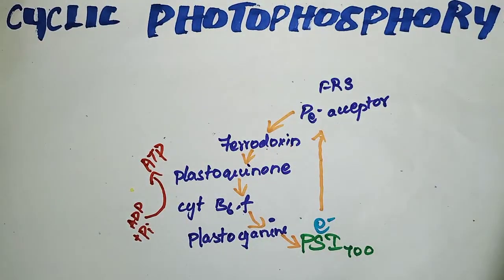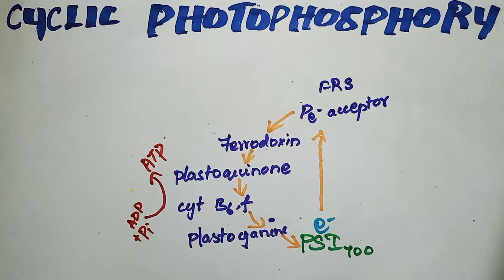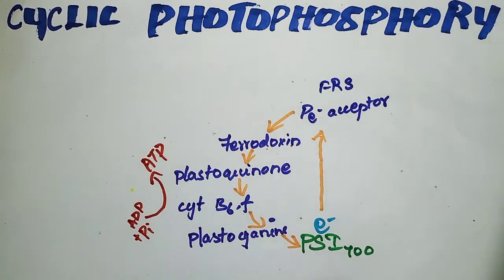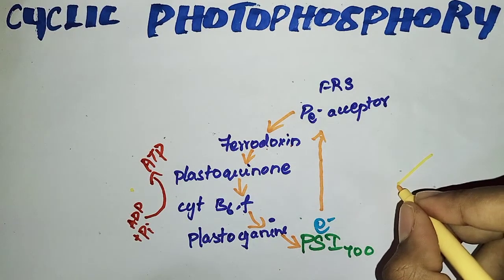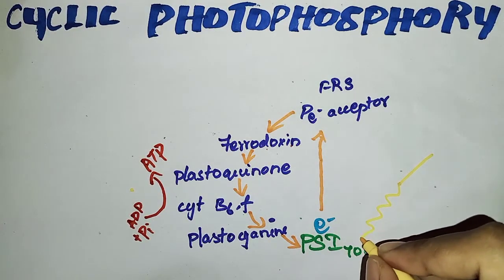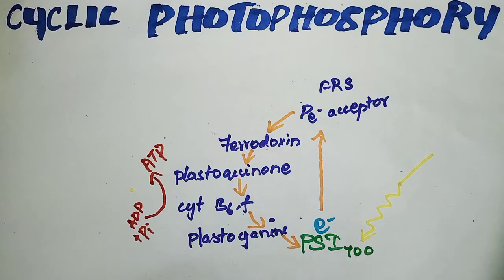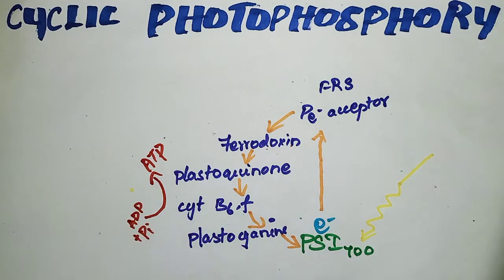Here there is no formation of NADPH — only ATP is formed. So light is exciting. This is cyclic photophosphorylation.